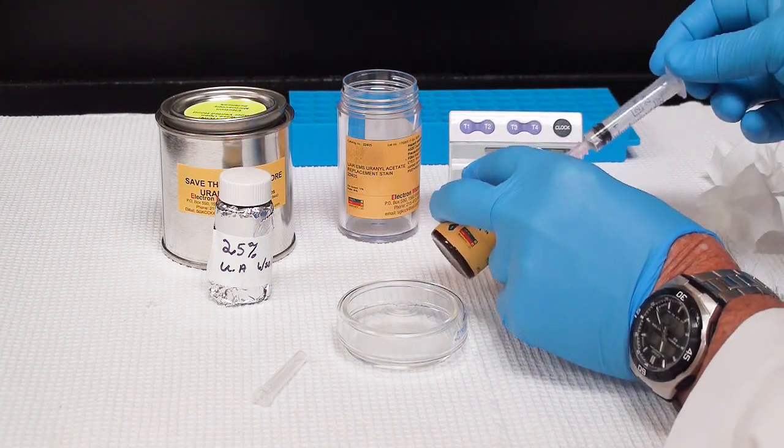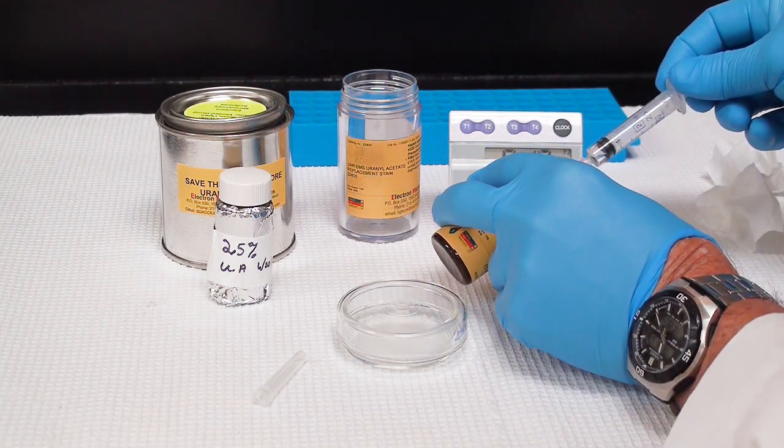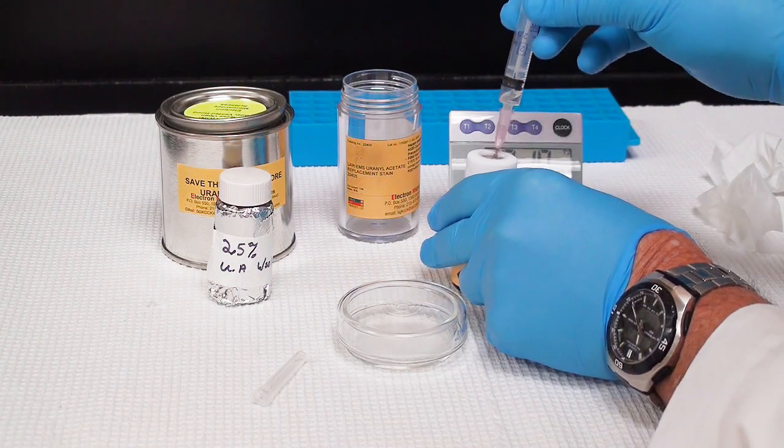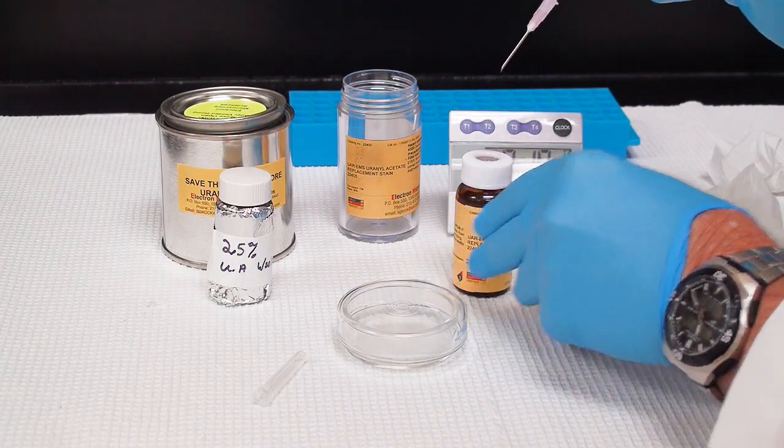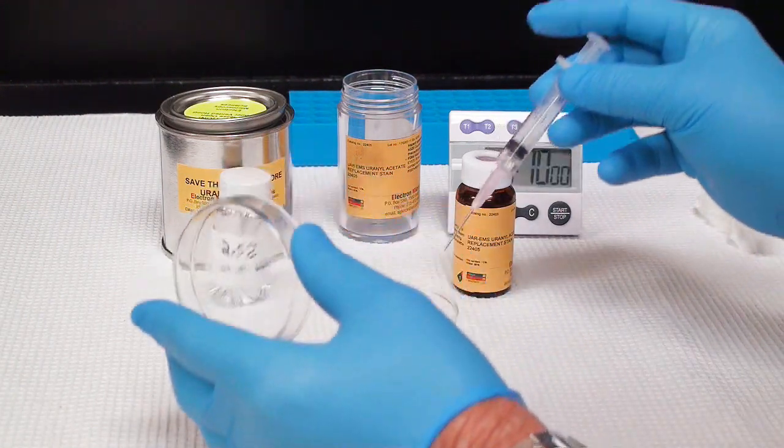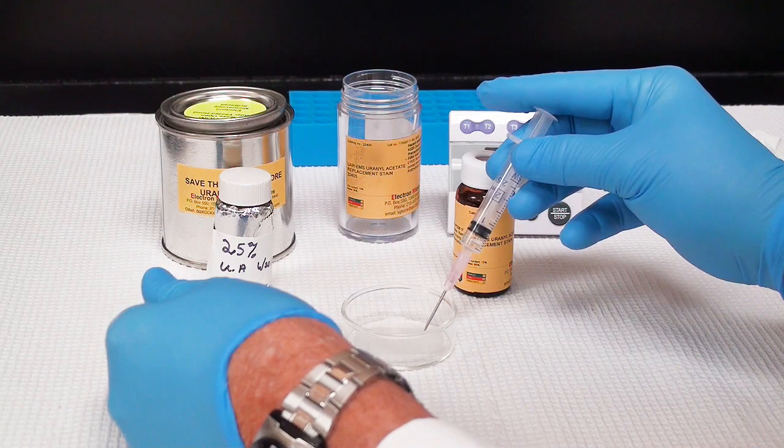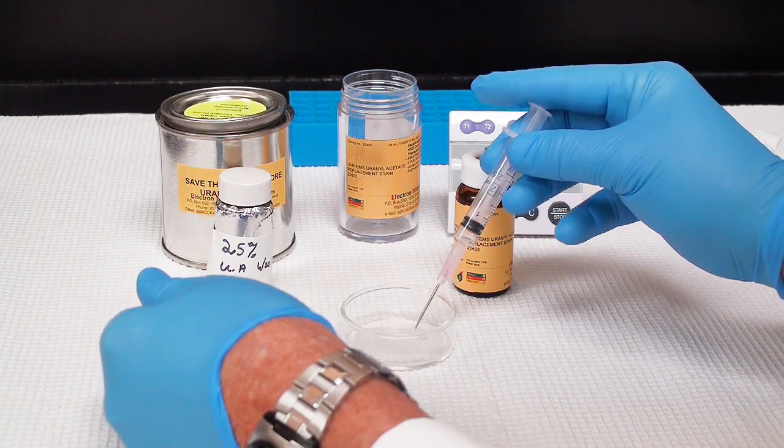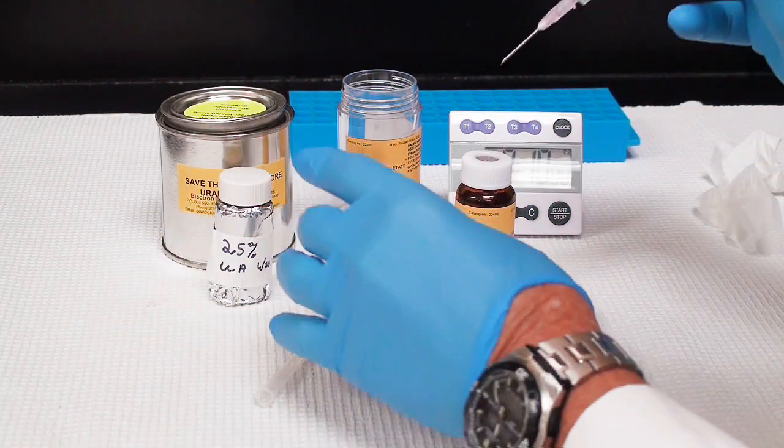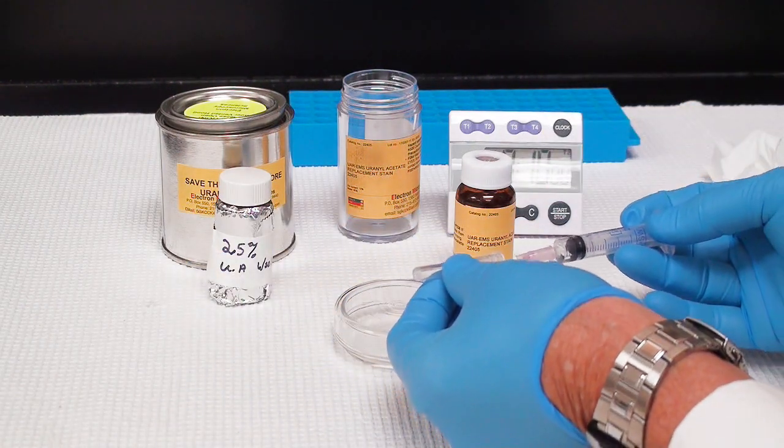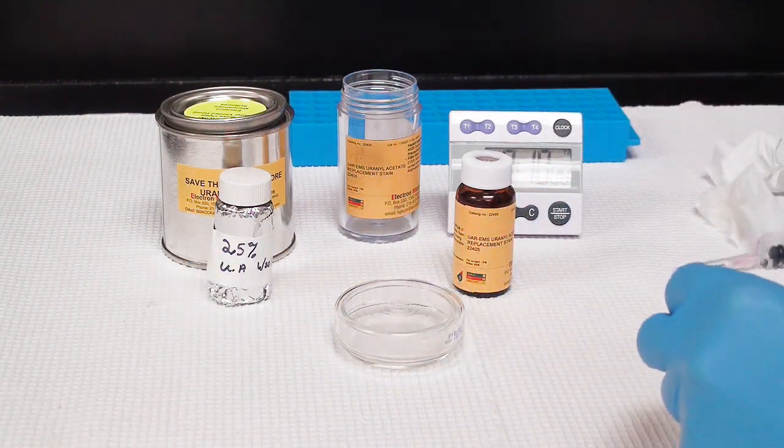To take this out, I'm just going to insert a little bit of air and extract some of the uranyl less out. And just put a drop. I have a piece of parafilm in a staining dish or a petri dish. This uranyl less, you don't have to worry about contamination. I've never had any when I'm using this.